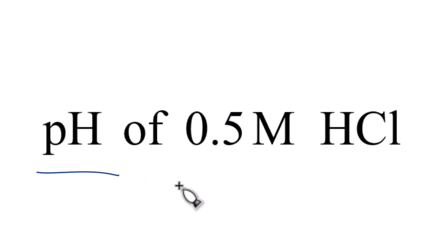So here's how you find the pH of a 0.5 molar solution of hydrochloric acid, HCl.